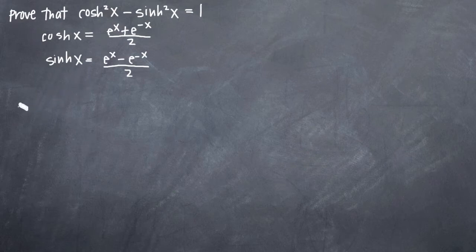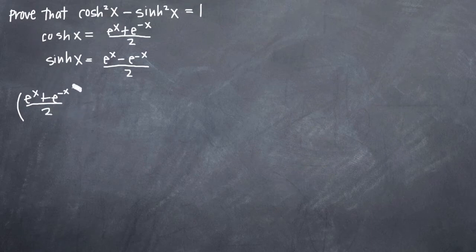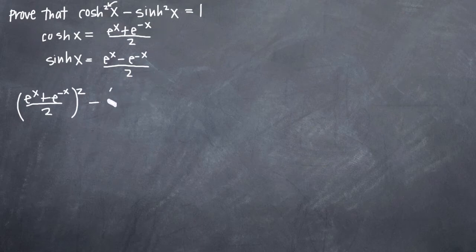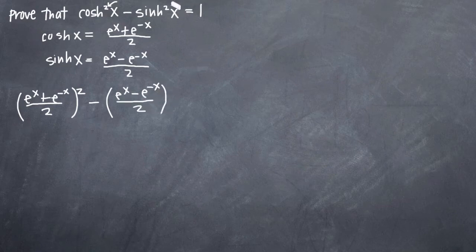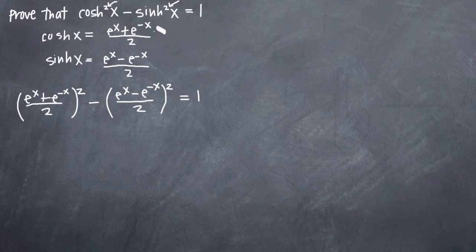So we'll go ahead and plug in e to the x plus e to the negative x, divided by 2, for hyperbolic cosine — but keep in mind that we've got this squared here, so we have to indicate that that identity is squared. And then plugging in for hyperbolic sine, we'll get e to the x minus e to the negative x, all divided by 2. Same thing here — we've got hyperbolic sine squared, so we have to square it, and then we set that equal to 1. If you need help remembering these identities, I have a table of them on the hyperbolic identities page of my website.